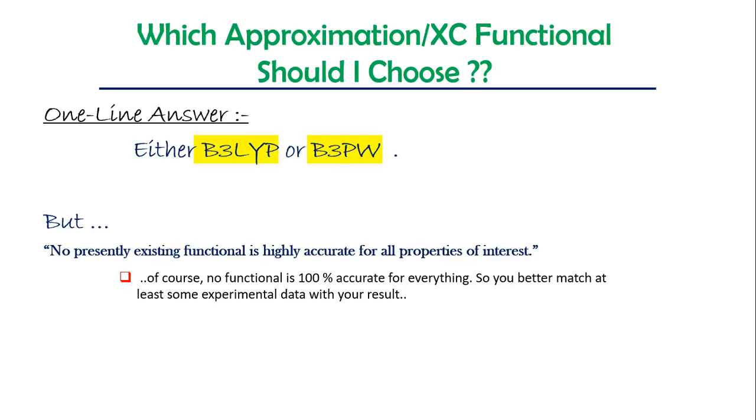But no presently existing functional is highly accurate for all properties of interest. Of course, no functional can be 100% accurate for everything, right? So what you have to do: you take some experimental data available, it can be some paper, it can be some experimental data of your own, and then match your DFT calculation result with this experimental data.